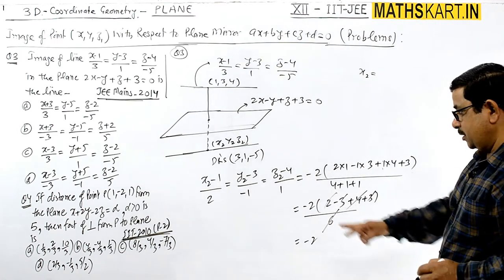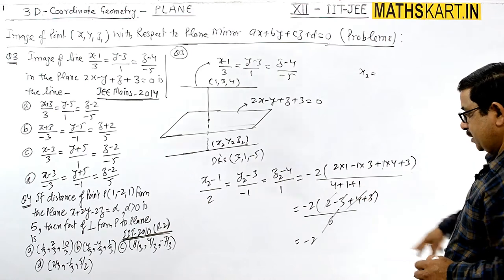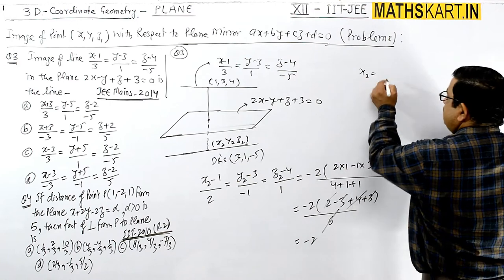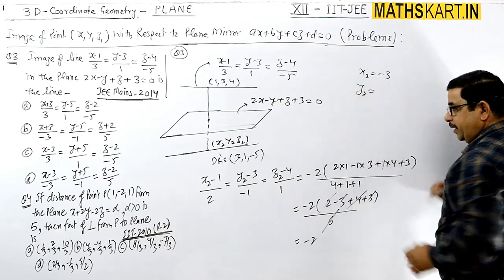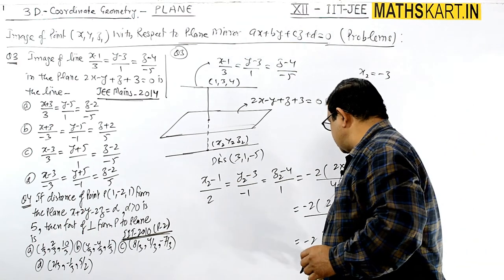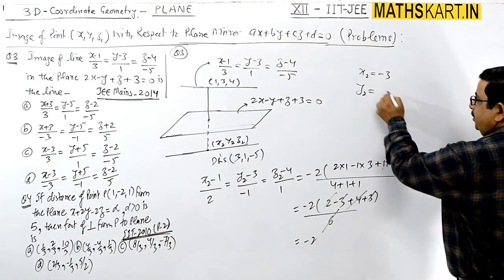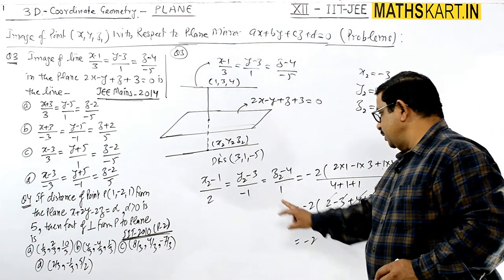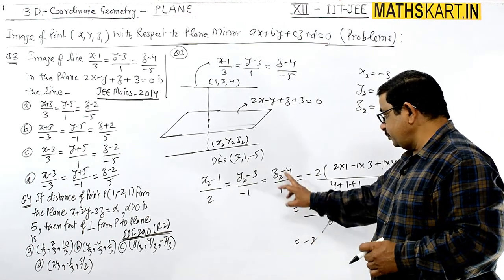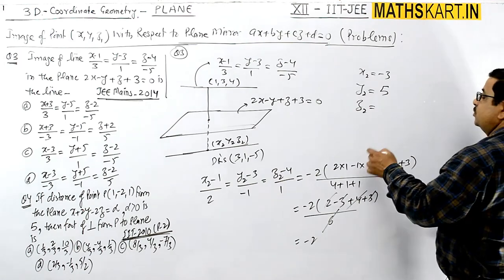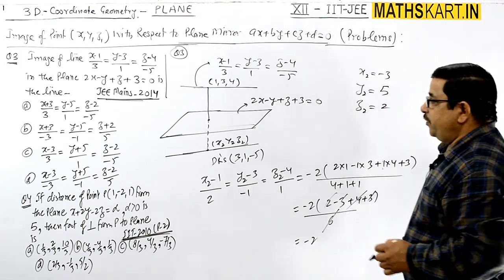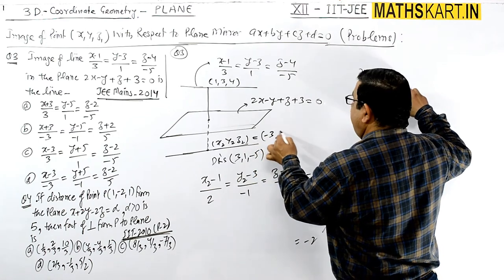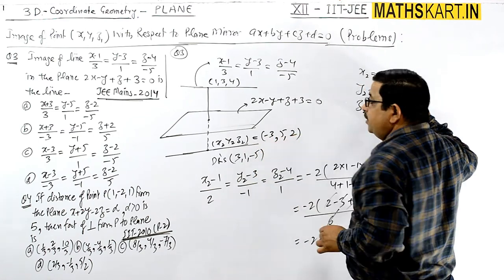The point we get: x2 equals -4 + 1, which is -3. For y2 coordinate, this is +2 and +3, so 5. z2 equals -2 + 4, which is 4 - 2, so positive 2.